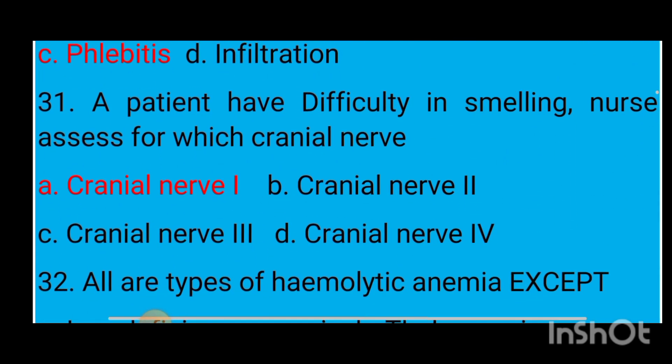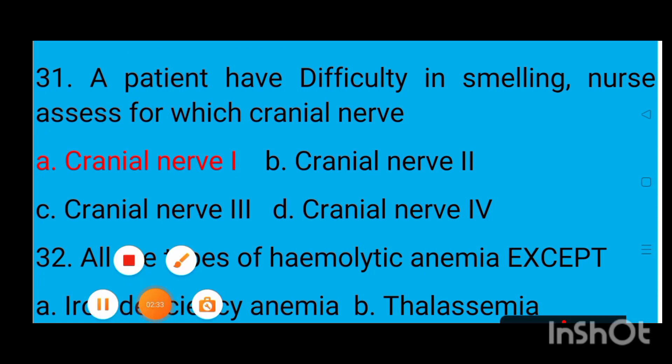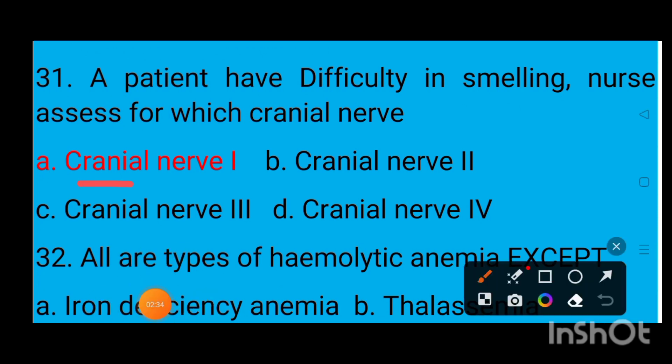Question number 31: A patient has difficulty in smelling. The nurse assesses for which cranial nerve? Option A cranial nerve 1, option B cranial nerve 2, option C cranial nerve 3, option D cranial nerve 4. The correct answer is option A — cranial nerve 1 — because the patient is having difficulty in smelling.